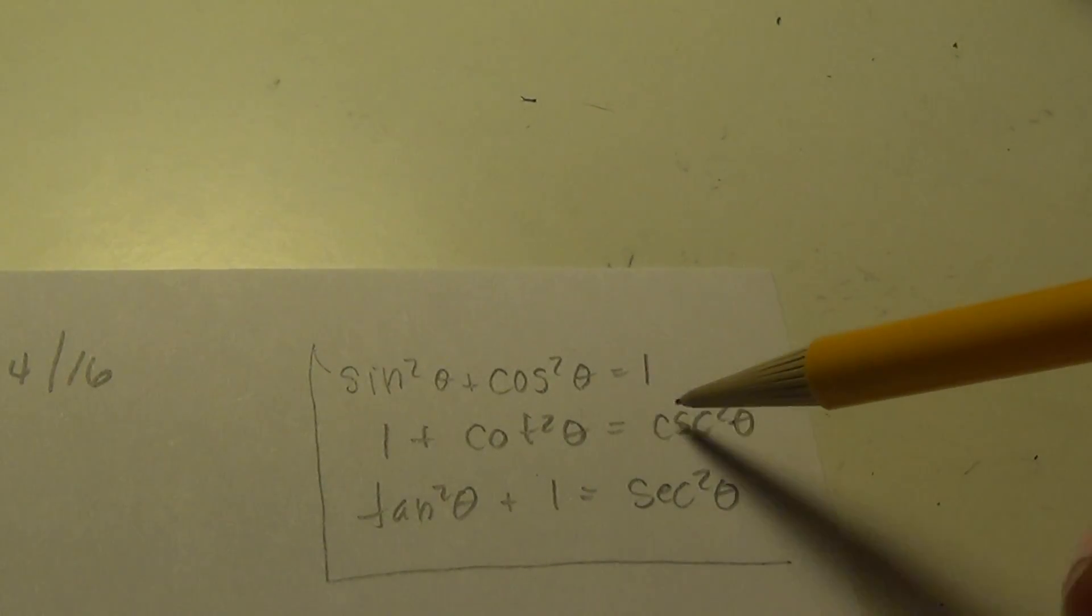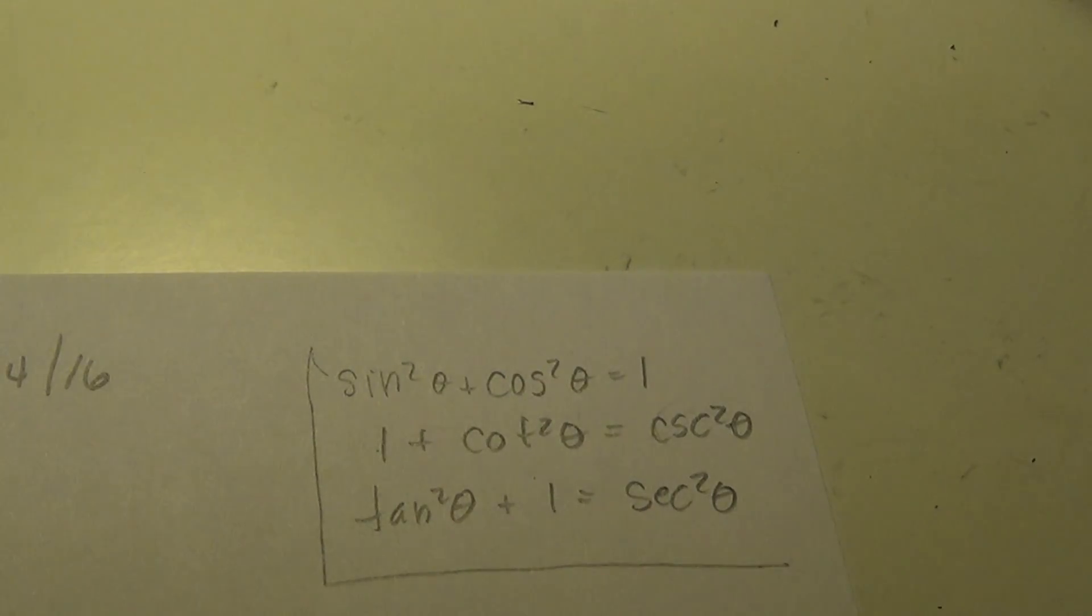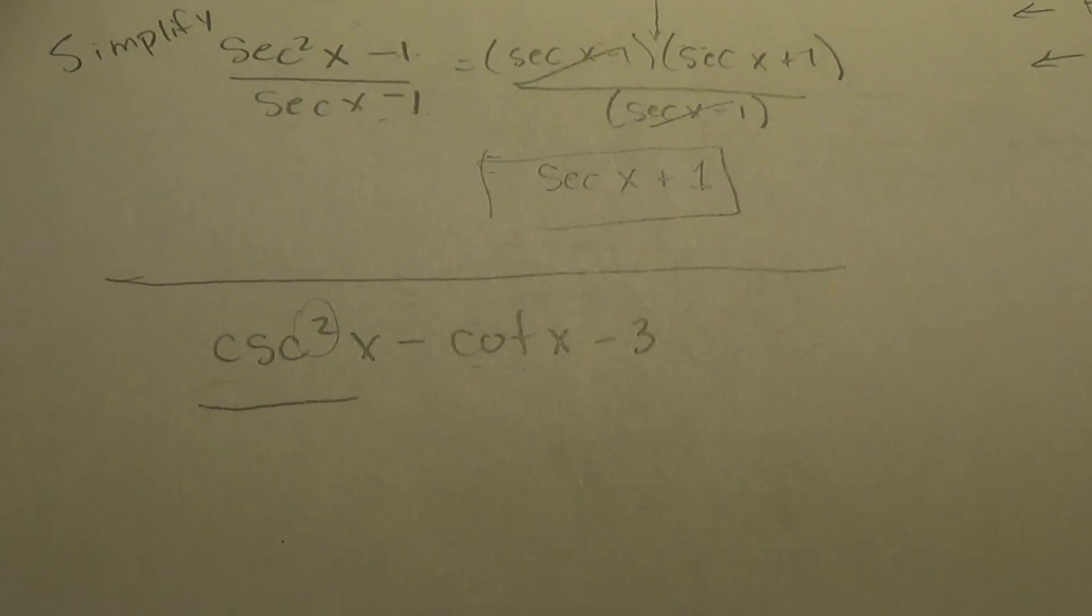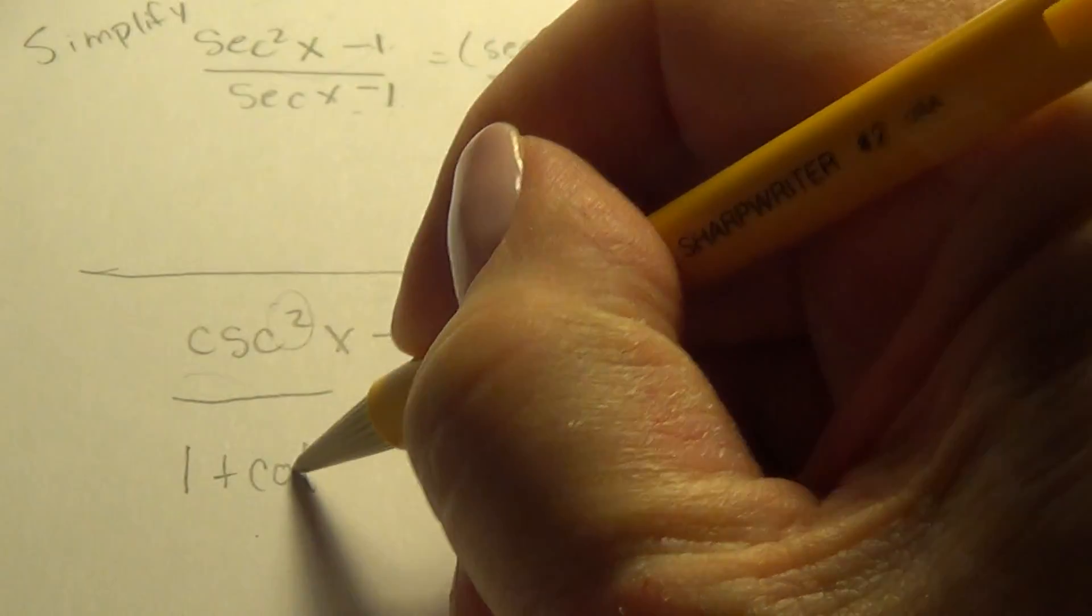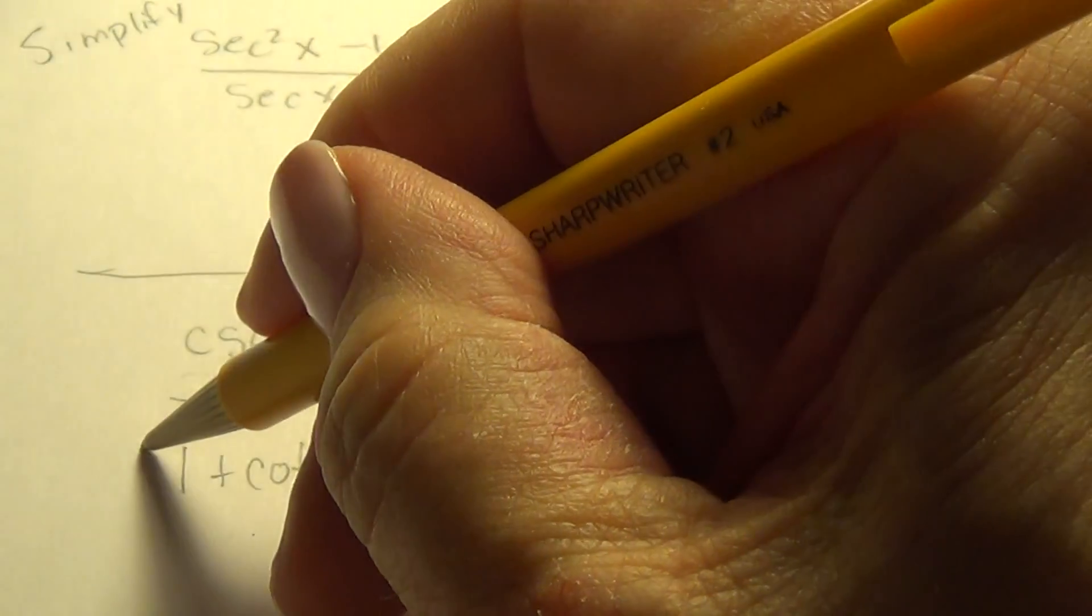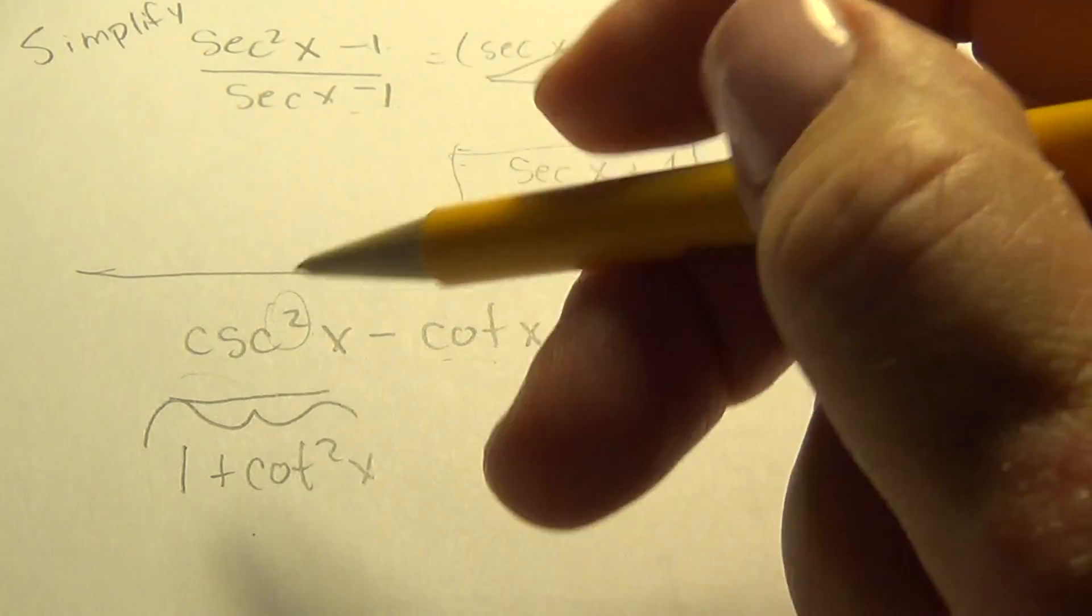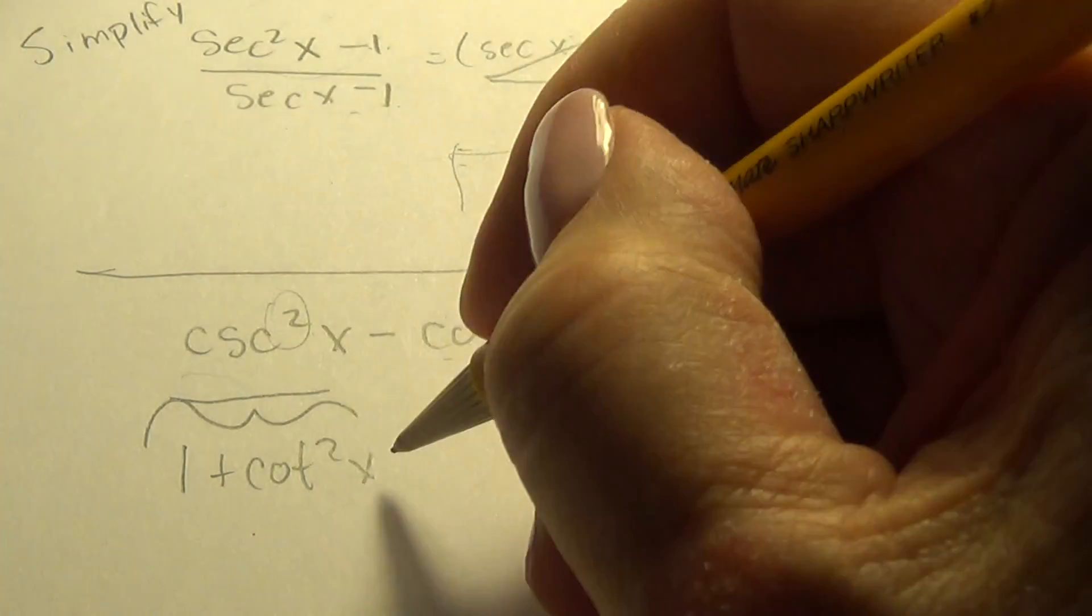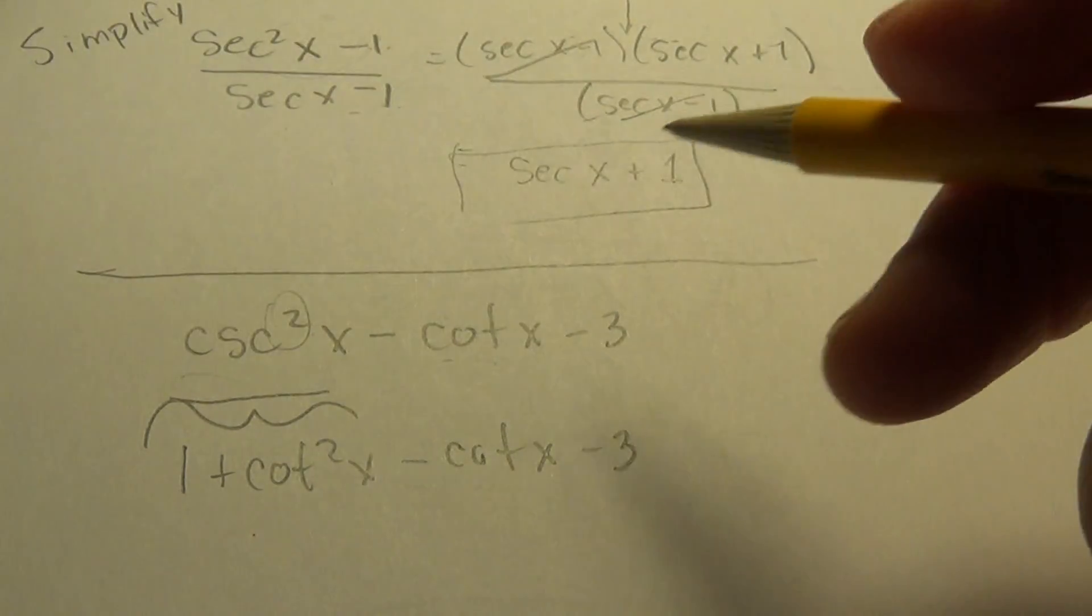So what if I replace cosecant squared in our problem with one plus cotangent squared? Do you see how that would give us the same function throughout the problem? So one plus cotangent squared is the same as cosecant squared. And I'm going to substitute that.